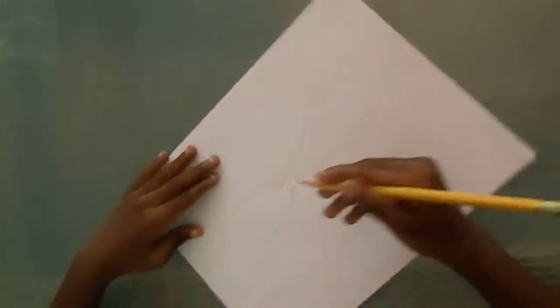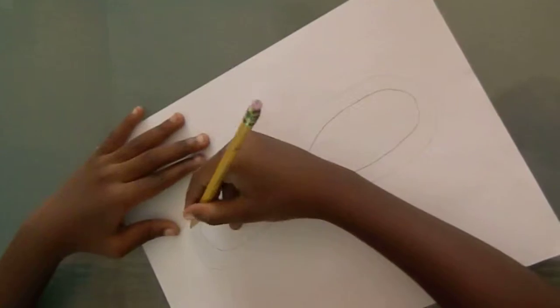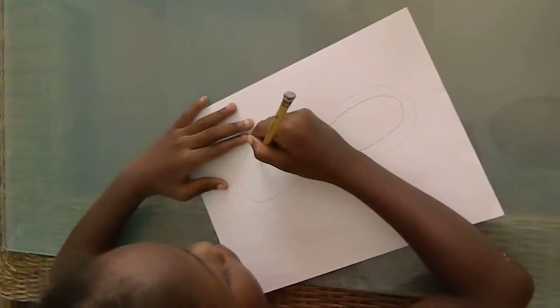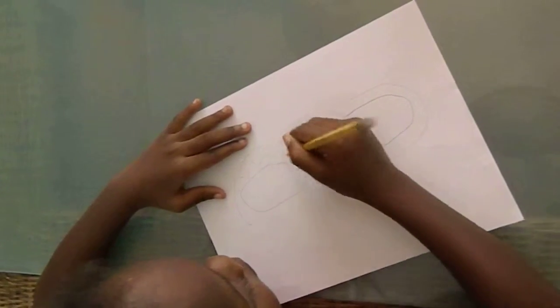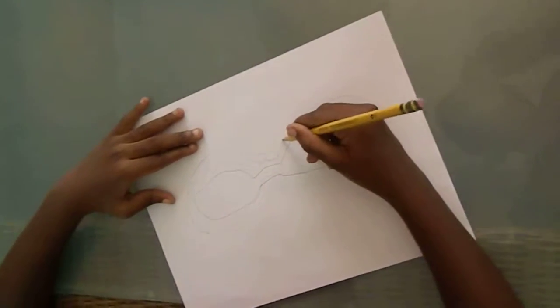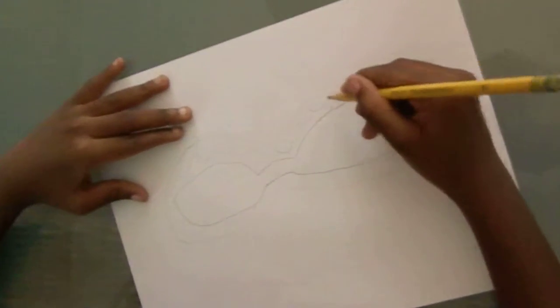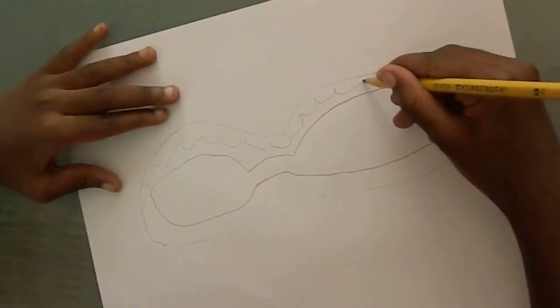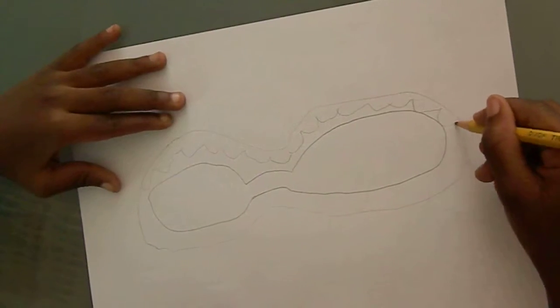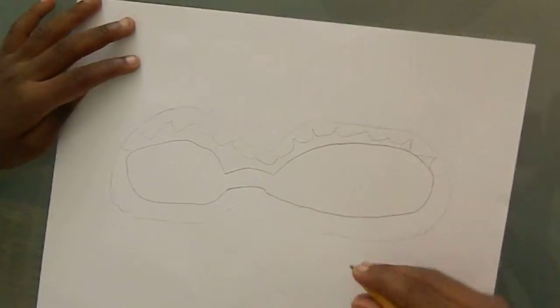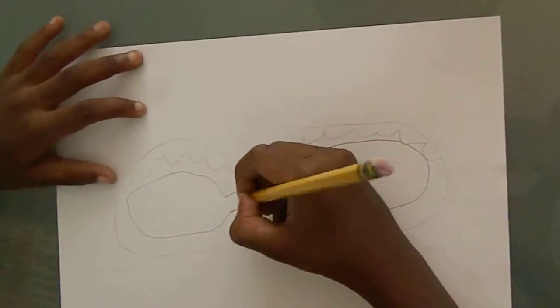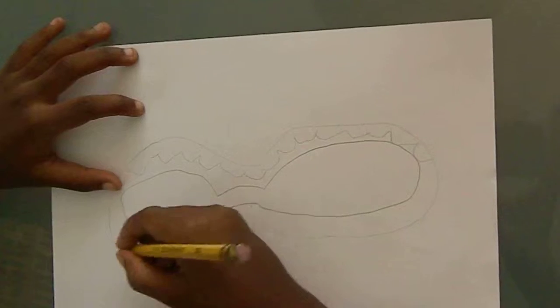You're going to draw the other side. There's going to be some pink. Now it's time to do this thing. You're going to do the bottom.